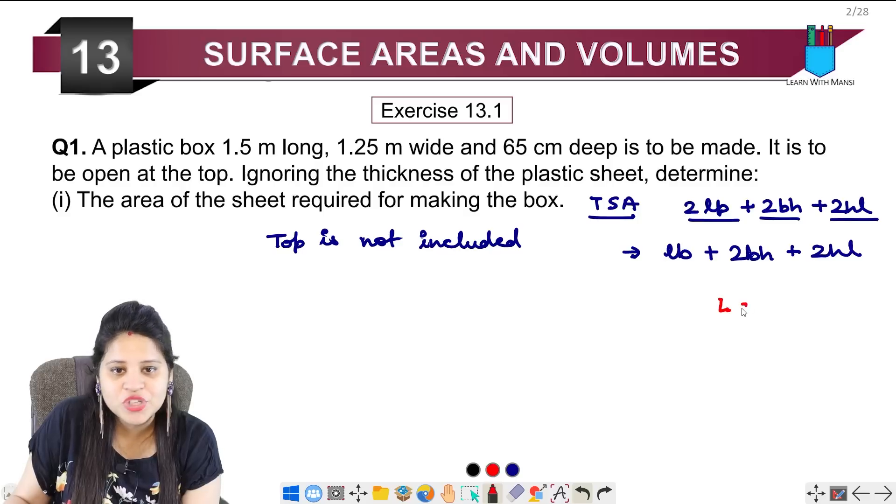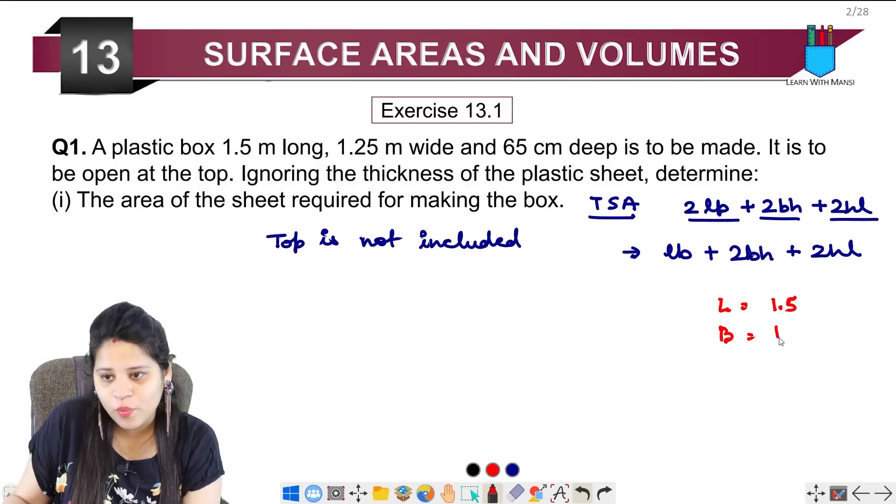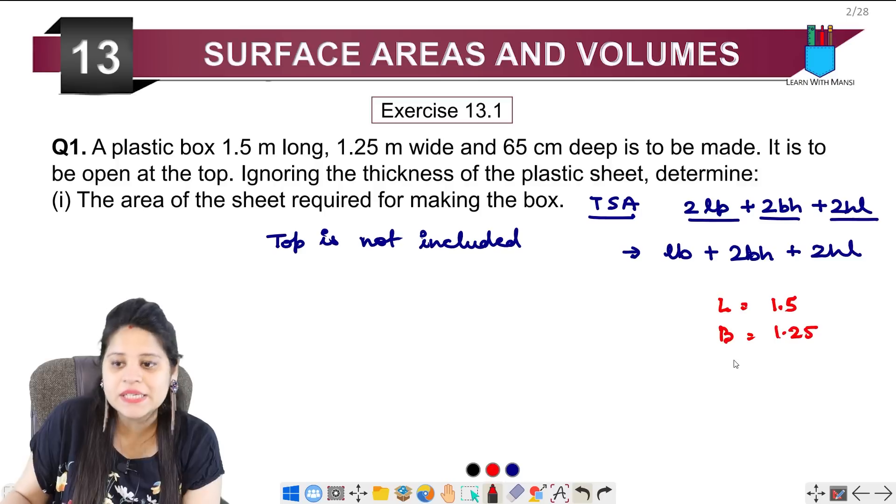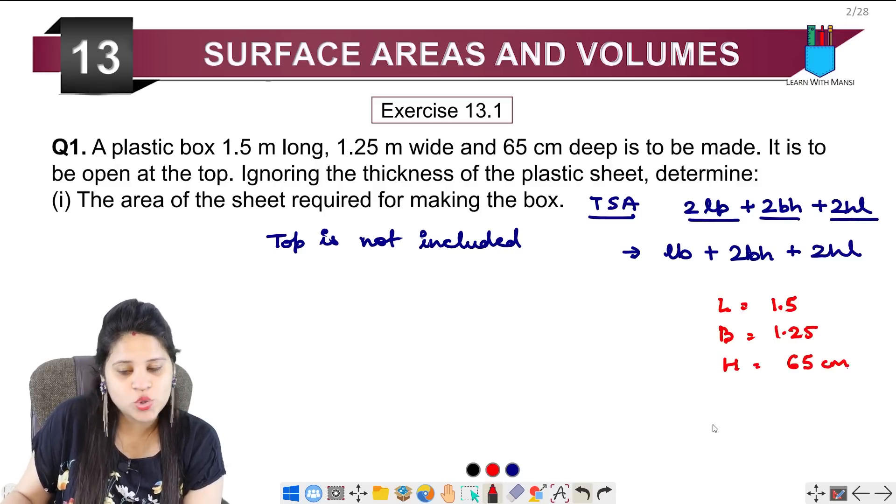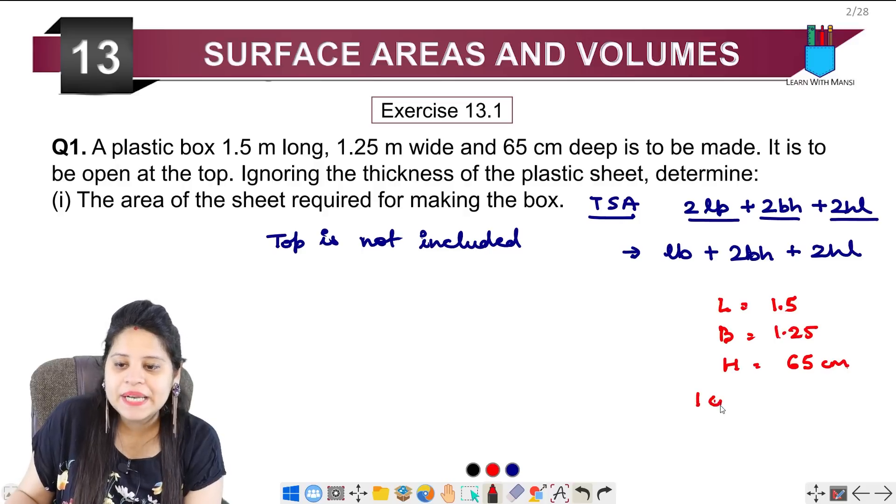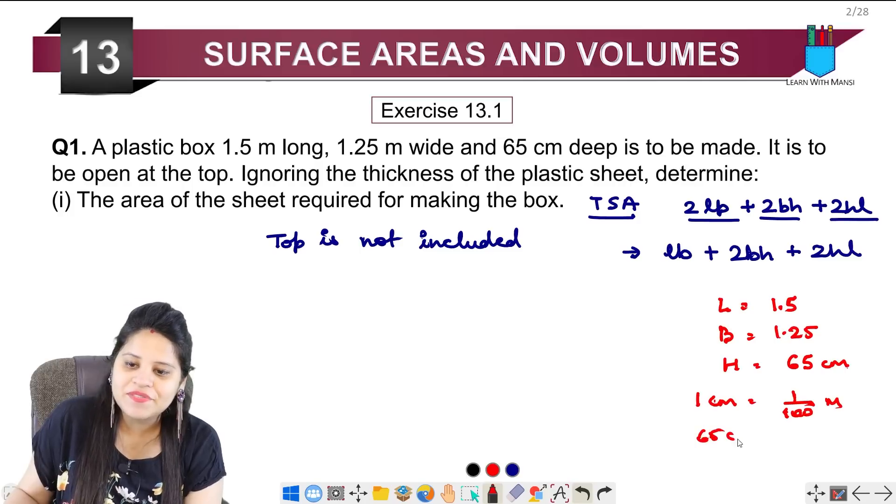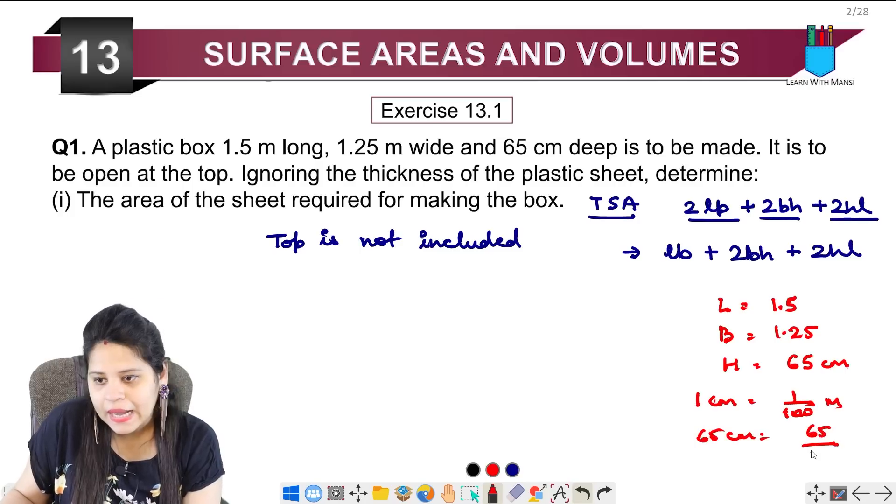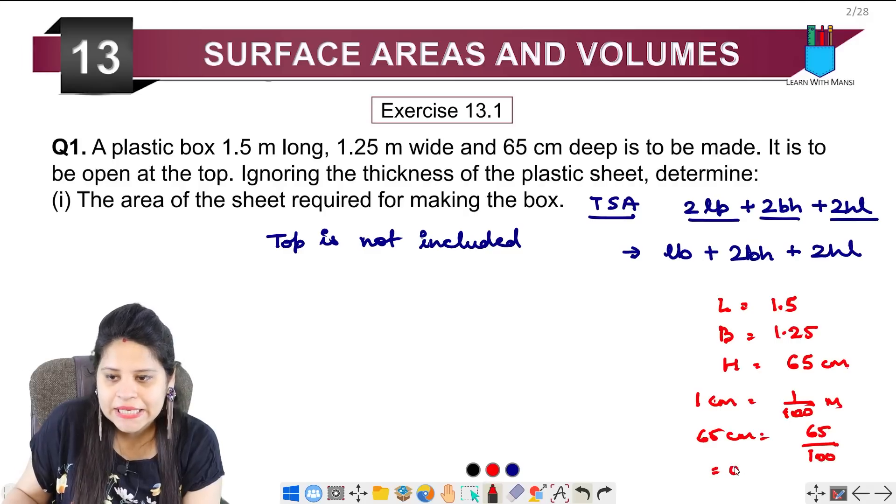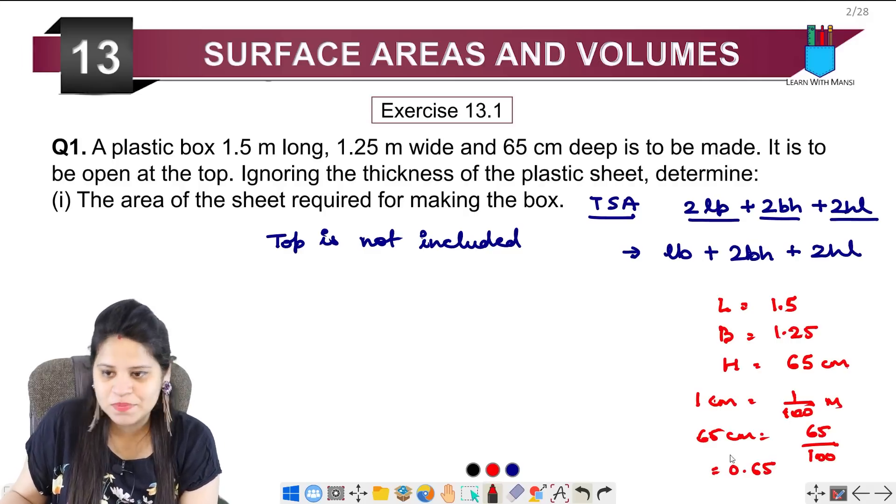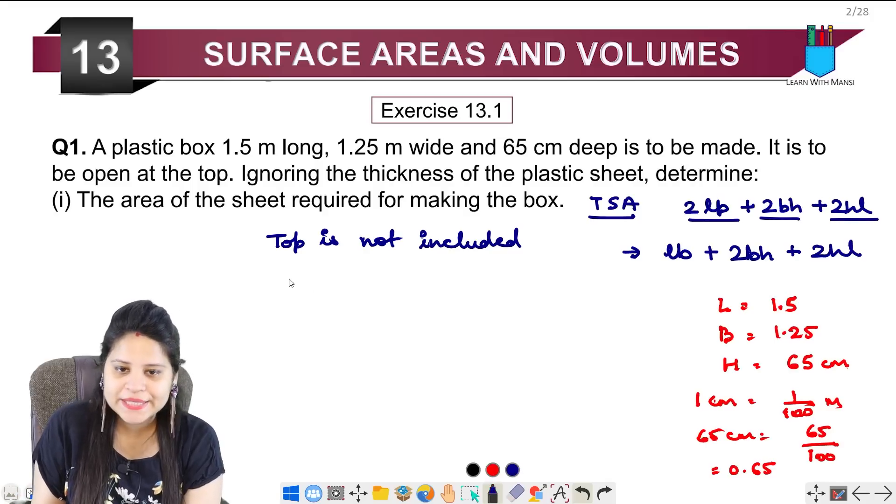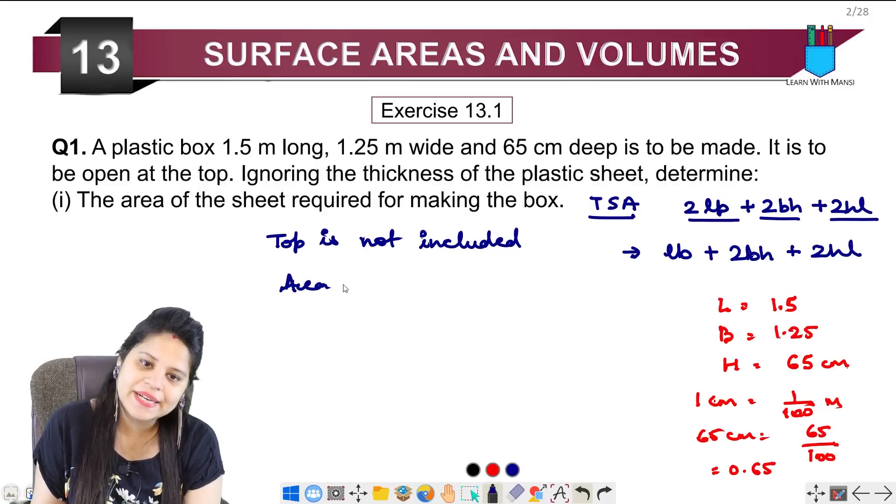Now, let's write here. How much length is given in question? 1.5 meter. We have breadth is 1.25 meter. And height is 65 cm. First of all, we will convert it. We know that 1 cm is 1 upon 100 meter. So, 65 cm upon 100 will be 0.65 meter. We have 3 things here. We will put it in the formula and find the area.